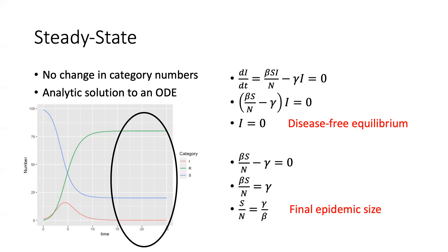There's another, more interesting solution: this equation will also be zero if beta S over N minus gamma equals zero. We can solve that for S over N — the proportion of susceptibles — and that ends up being gamma over beta. That is our final epidemic size: it tells us how many people will be susceptible at the end of the epidemic. This proportion susceptible is the number of people who didn't get infected, so the number who did get infected is one minus gamma over beta — that is, for this SIR model, the final epidemic size. If we know gamma and beta, we can calculate that.